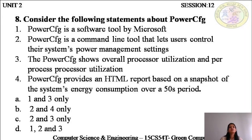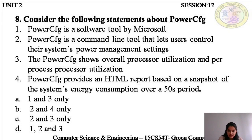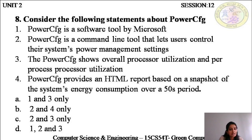The next is about Power Configuration. It is a software tool by Windows — that first statement is correct. It is a command line tool so you can use it in your command line, and it tells you about all the system's power management settings — that is true. The third point: Power Configuration shows overall processor utilization and per-process processor utilization — also true. The fourth point states it provides an HTML report based on a snapshot of the system's energy consumption over a 50-second period — this is false. Power Configuration provides an HTML report on a snapshot of the system's energy consumption not over 50 seconds, but a 60-second period. So the answer is 1, 2, and 3 — option D.